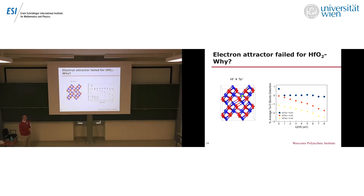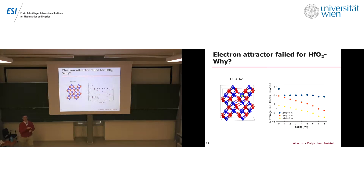Let me explain why the electron attractor method failed for hafnium dioxide while the bond distortion method worked. When we replace hafnium with a tantalum atom, what we get is a state that doesn't look like a polaron — the bond lengths are actually decreasing, becoming negative distortions or shortenings, as a function of U-value. So when we give the code an initial geometry that doesn't look like a polaron, it doesn't form a polaron. The electron attractor method is simply not working for hafnium dioxide.